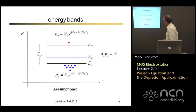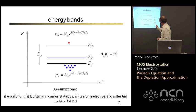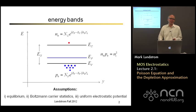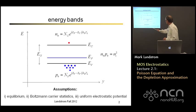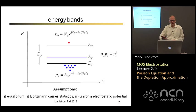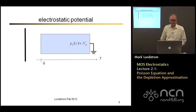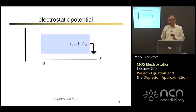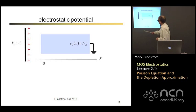There are a number of assumptions. This only works in equilibrium. We're assuming Boltzmann statistics so that we can use exponentials instead of Fermi-Dirac integrals, and we have a uniform electrostatic potential so the bands are flat. Now what we really want to talk about is what happens when there is an electrostatic potential that is spatially varying inside the semiconductor. We're going to be doing things like putting a gate voltage on.